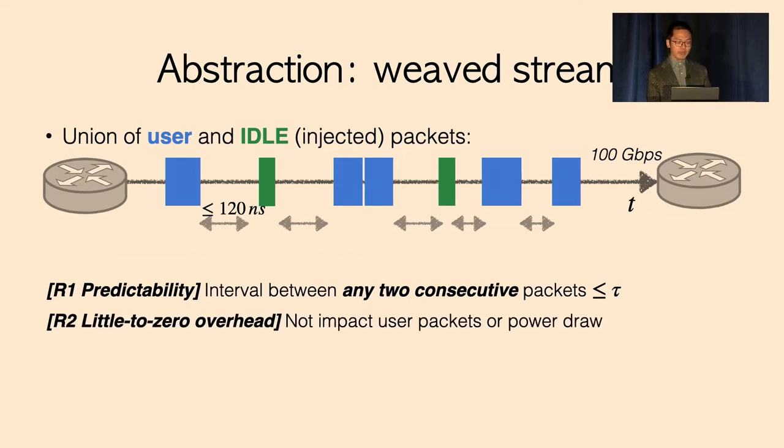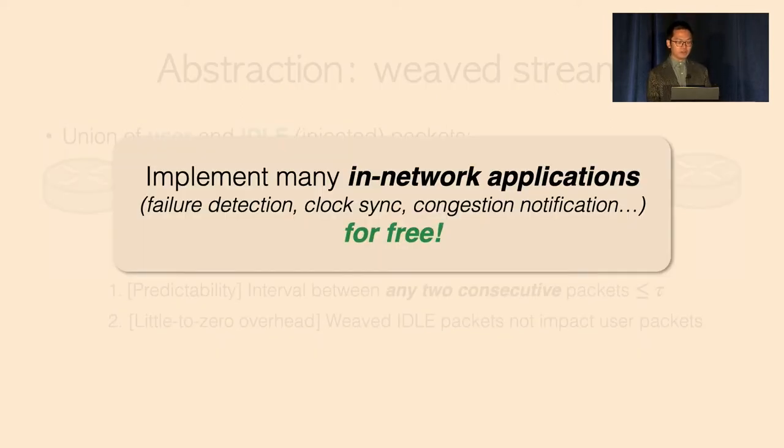Second, the weaved idle packets should not impact or decrease the effective throughput of user traffic, increase the loss rate, or the power draw of the switch. We found that OpWeaver's WeaveString abstraction brings in significant benefits. It allows us to implement a wide range of applications such as failure detection, clock synchronization, congestion notification, and so on. OpWeaver enables this with negligible impact to existing throughput, latency, or power draw.